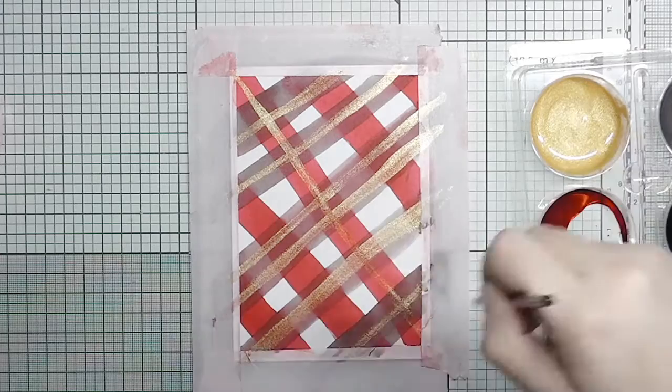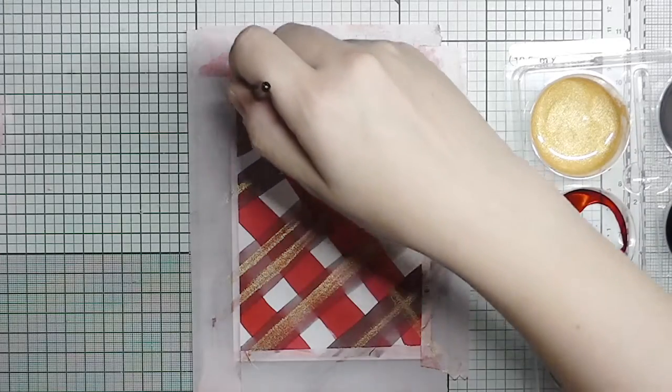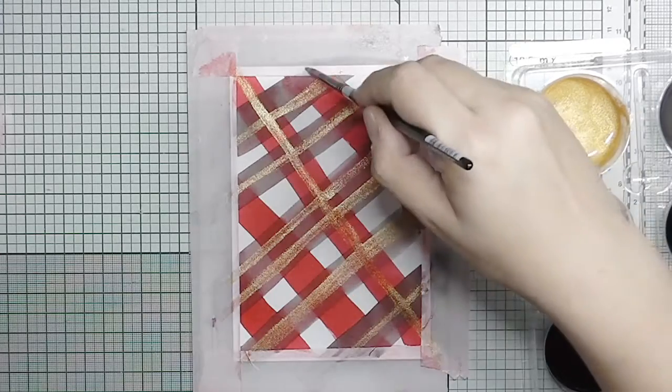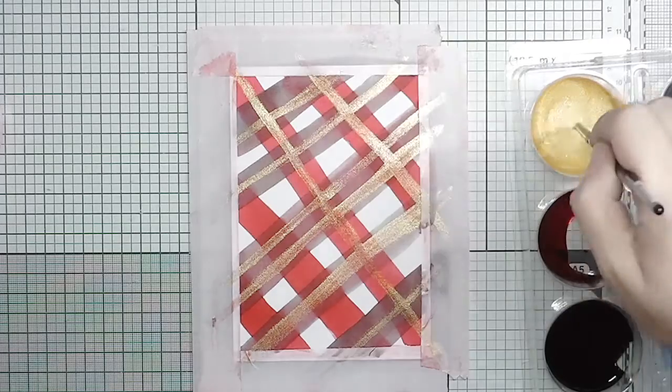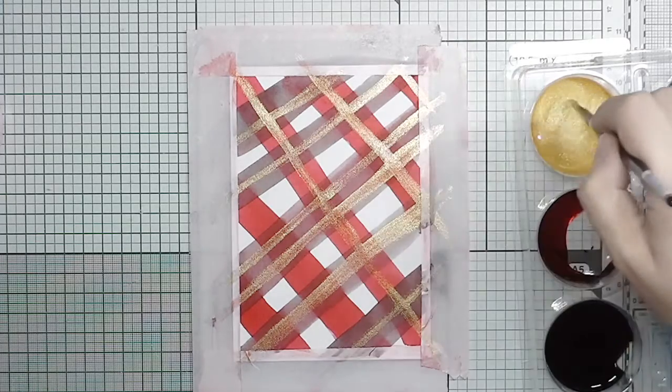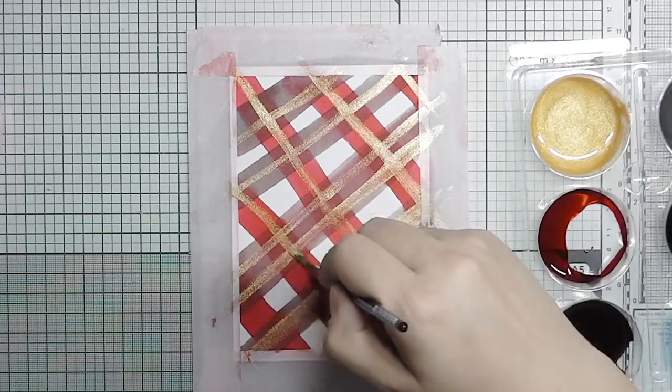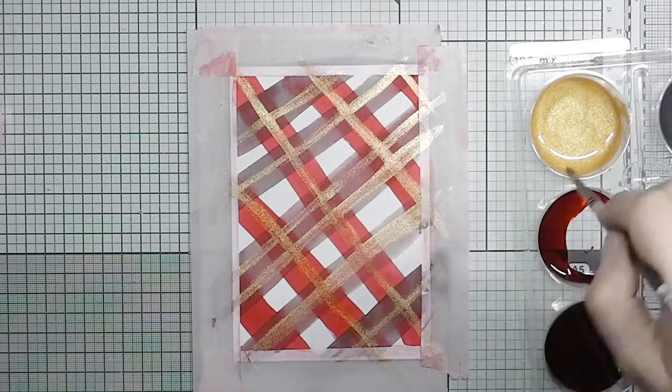If you don't want it as opaque, you can water it down a bit to make it thinner and you will just get a shimmery sort of ink. I actually do this when I use my metallics.